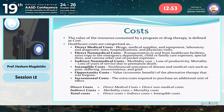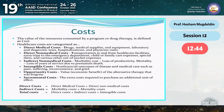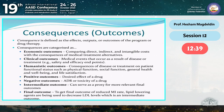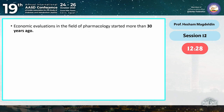Total cost means direct, indirect, and intangible costs — those which cannot be measured in money, like pain and quality of life. The consequences may be economic, but clinical outcomes are very important, and humanistic outcomes such as quality of life are now getting very important.